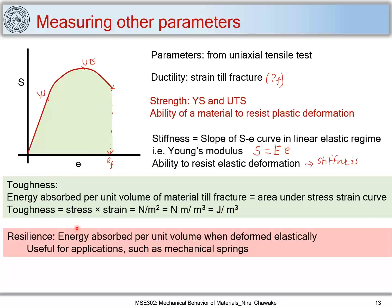Now, resilience is defined as energy absorbed per unit volume when deformed elastically. Toughness was the area under the total stress-strain curve, covering elastic to plastic region. But resilience is the energy absorbed in the elastic region. The area under the elastic region identifies the resilience of a material. More the resilience means more the ability of the material to absorb energy during elastic deformation. It is useful in applications such as mechanical springs.